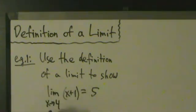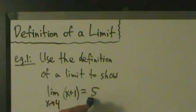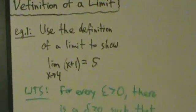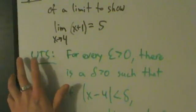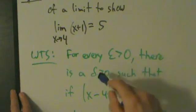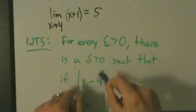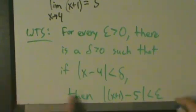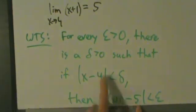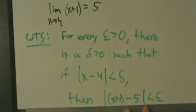So it's pretty straightforward. We can just do this by direct substitution — we can just substitute 4 in for x and show that it's 5. But how do we use the definition to actually do that? So if we use the definition, what we want to show — WTS is short for 'want to show' — is that for every epsilon greater than 0, there is a delta greater than 0 such that if the absolute value of x minus 4 is less than delta, then absolute value of f(x) minus L is less than epsilon. Here our f(x) is x plus 1 and our L is 5.